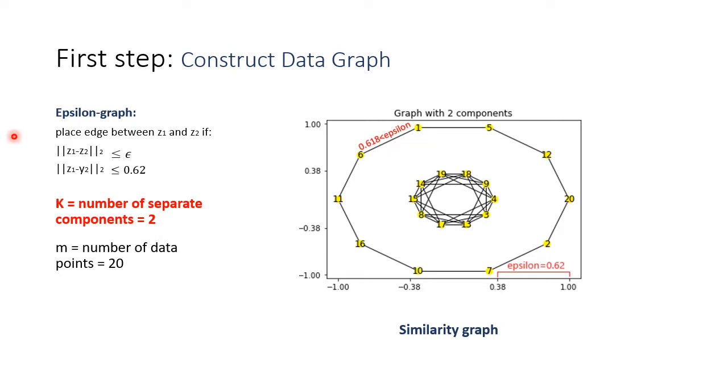In our case, graph consists of two connected components, the first one and the second one. Let K represent that number. Each component corresponds to one ring-shaped cluster. The epsilon used is equal to 0.62.